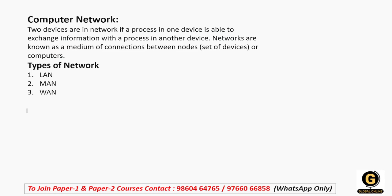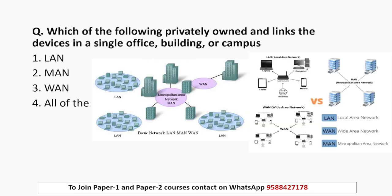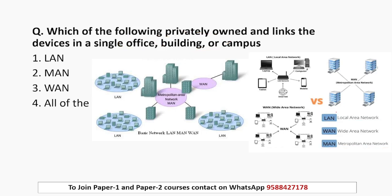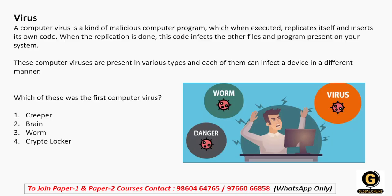LAN, MAN, WAN के बारे में: LAN का full form है Local Area Network, WAN है Wide Area Network और MAN है Metropolitan Area Network। अगर एक ही building में छोटे level पे काम करना है तो सबसे छोटा होता है LAN। उससे बड़ा होता है MAN और सबसे बड़ा होता है WAN। WAN का एक example है internet जो पूरे world को connect करने में मदद करता है।